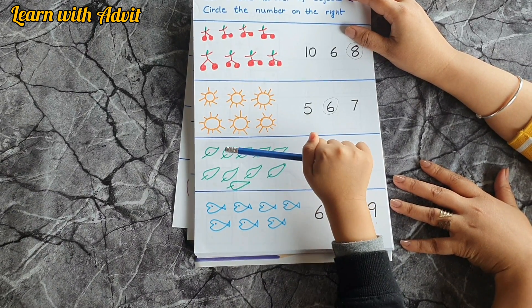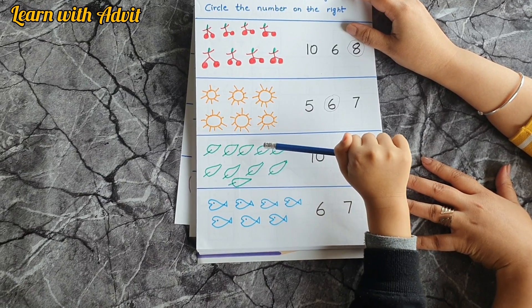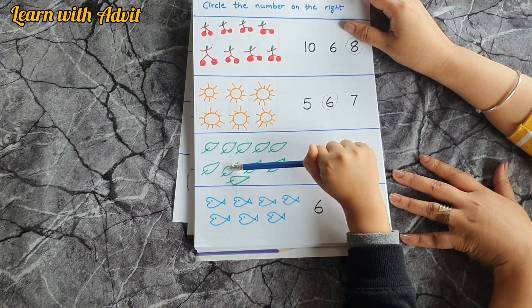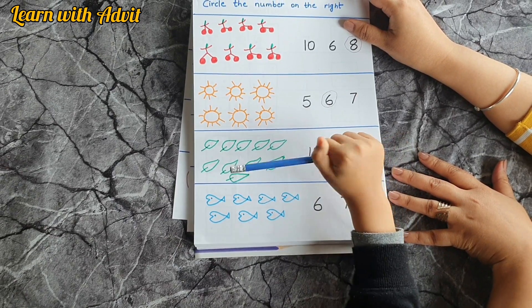One, two, three, four, five, six, seven, eight, nine, ten. Very good.